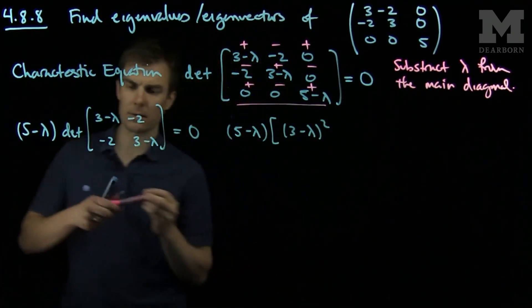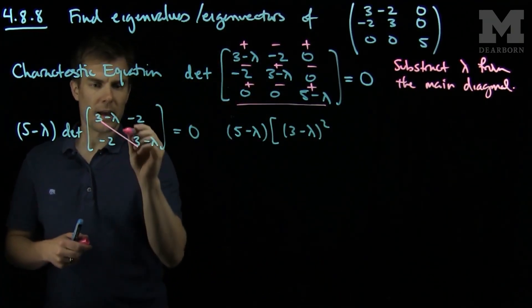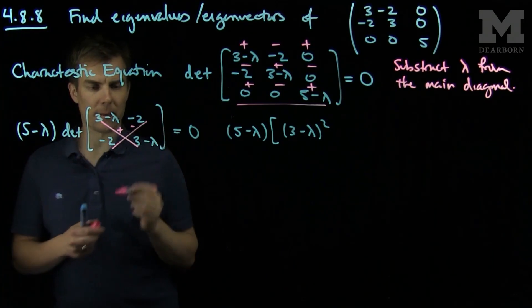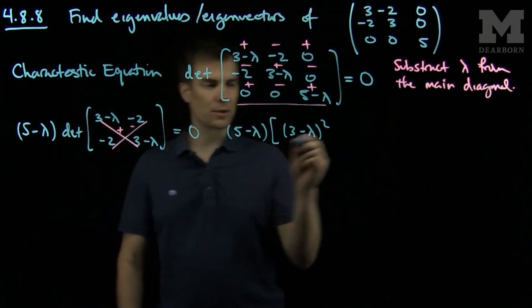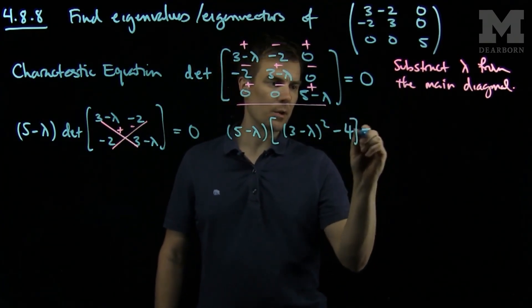Because I take the main diagonal, that will get a plus, and the off diagonal will get a minus sign. And then I'll have minus 4 equals 0.